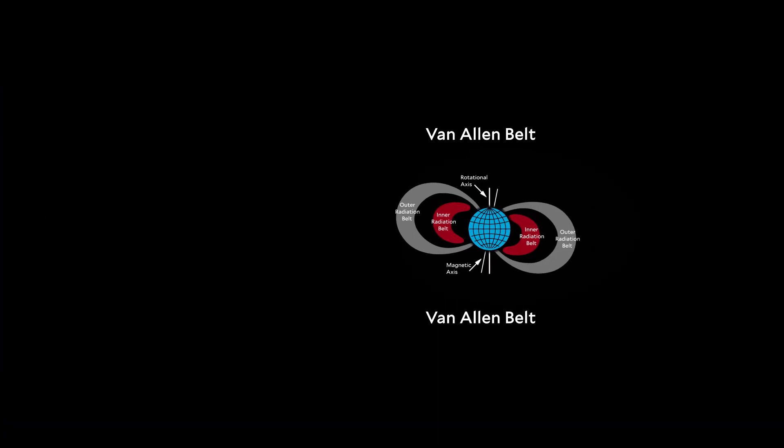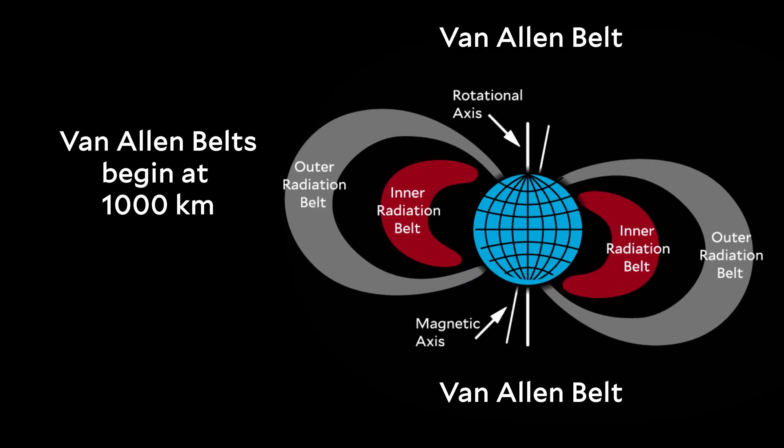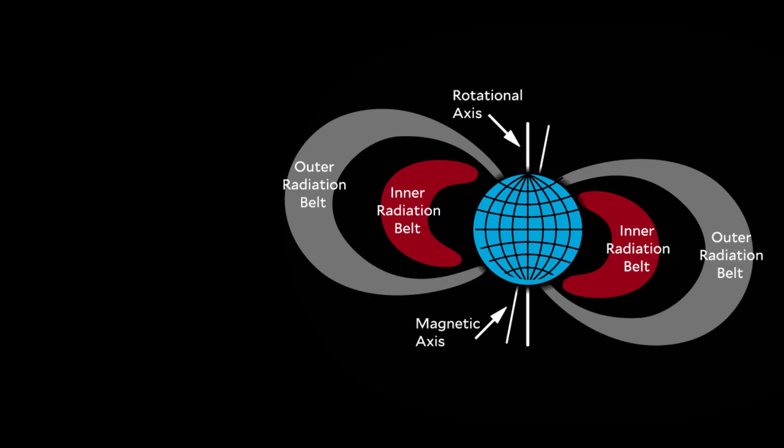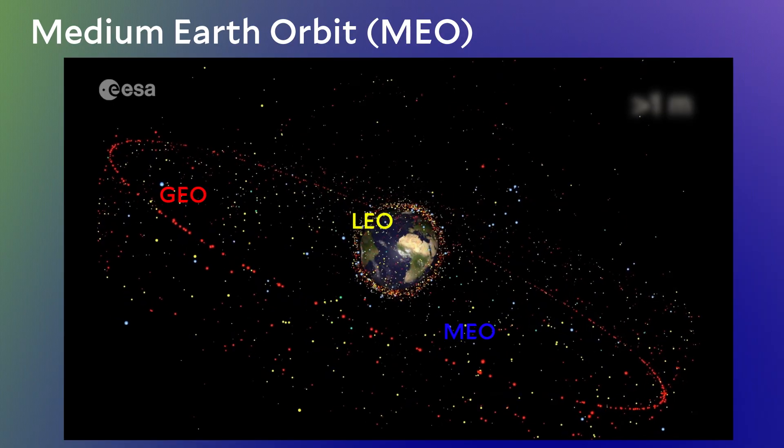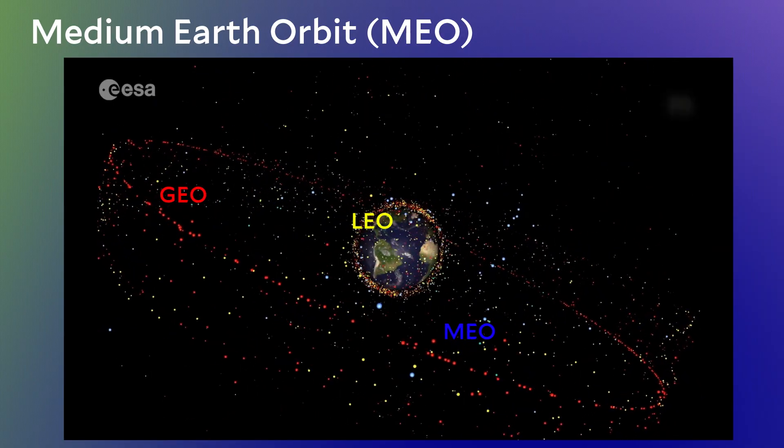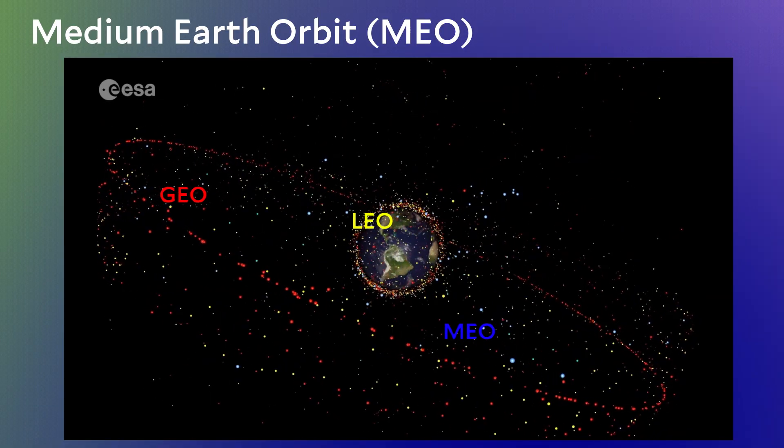The Van Allen belts start at 1,000 kilometers above the Earth's surface. That is, low Earth orbit satellites are somewhat shielded from this nasty radiation stuff. The Van Allen belts extend all the way out to 60,000 kilometers, but the radiation in the inner region from about 1,000 to 12,000 kilometers is particularly challenging, and most satellites just completely avoid this region. That explains why there are far fewer satellites in medium Earth orbit as compared to low Earth orbit. It's just a difficult place to be.